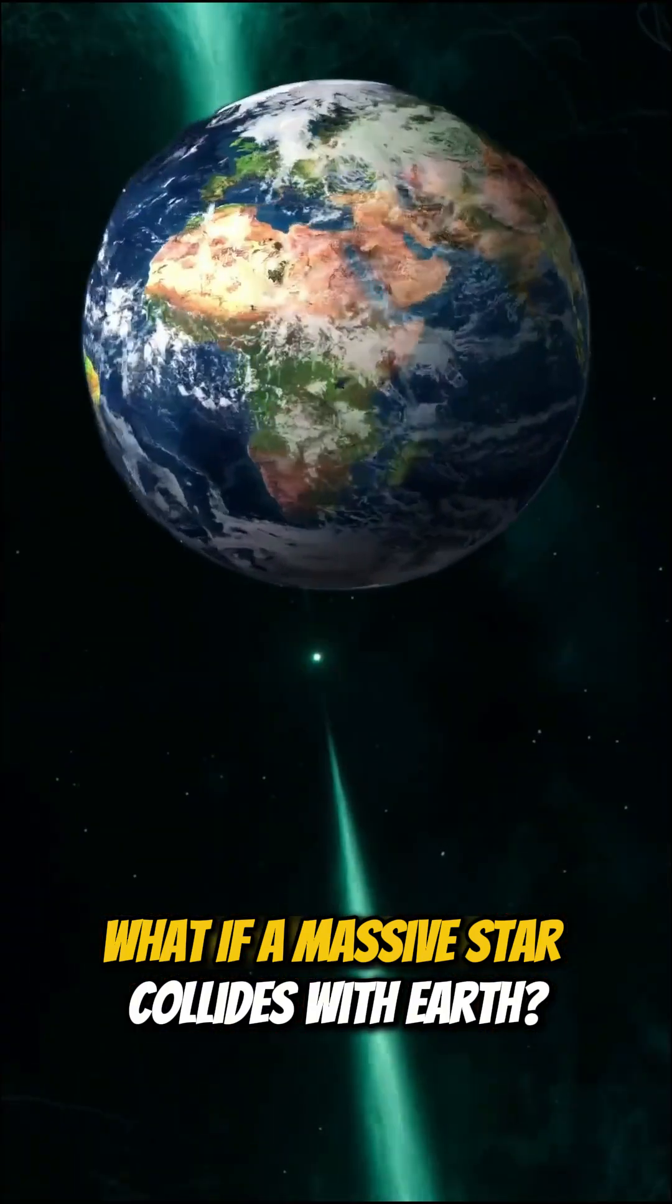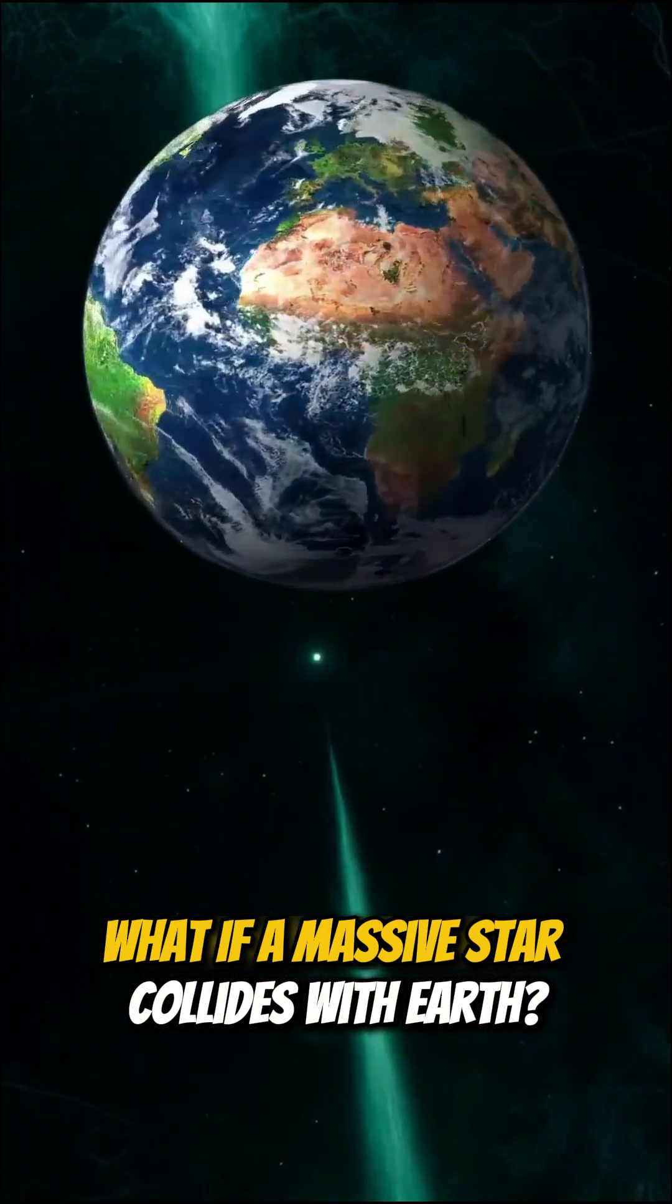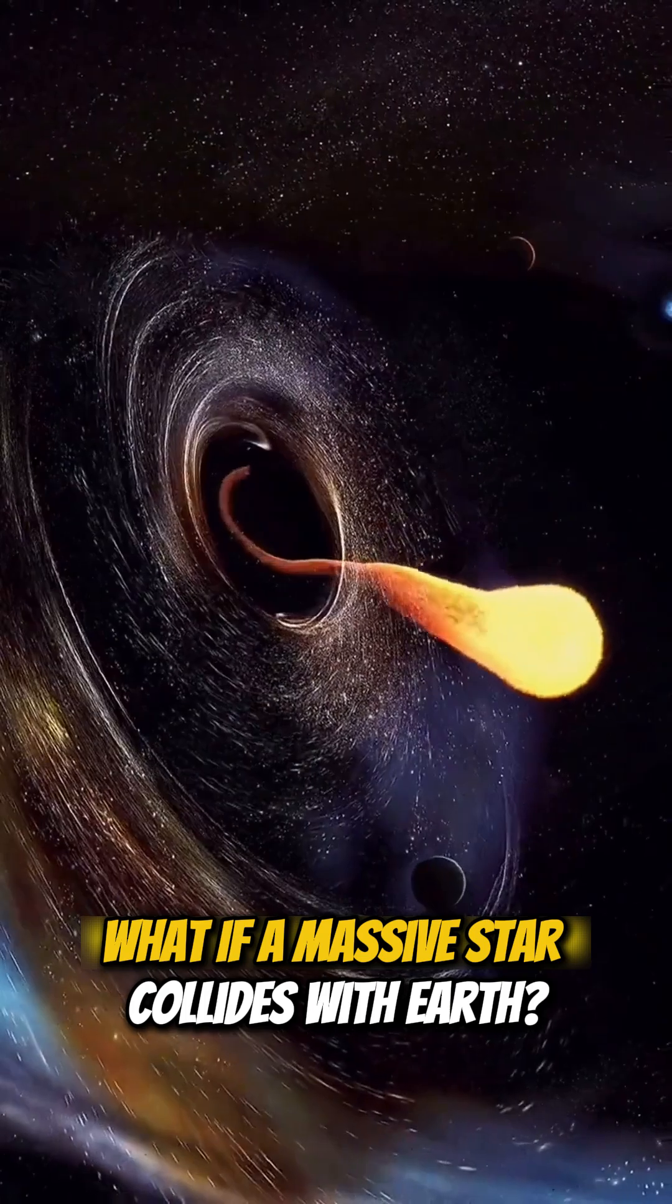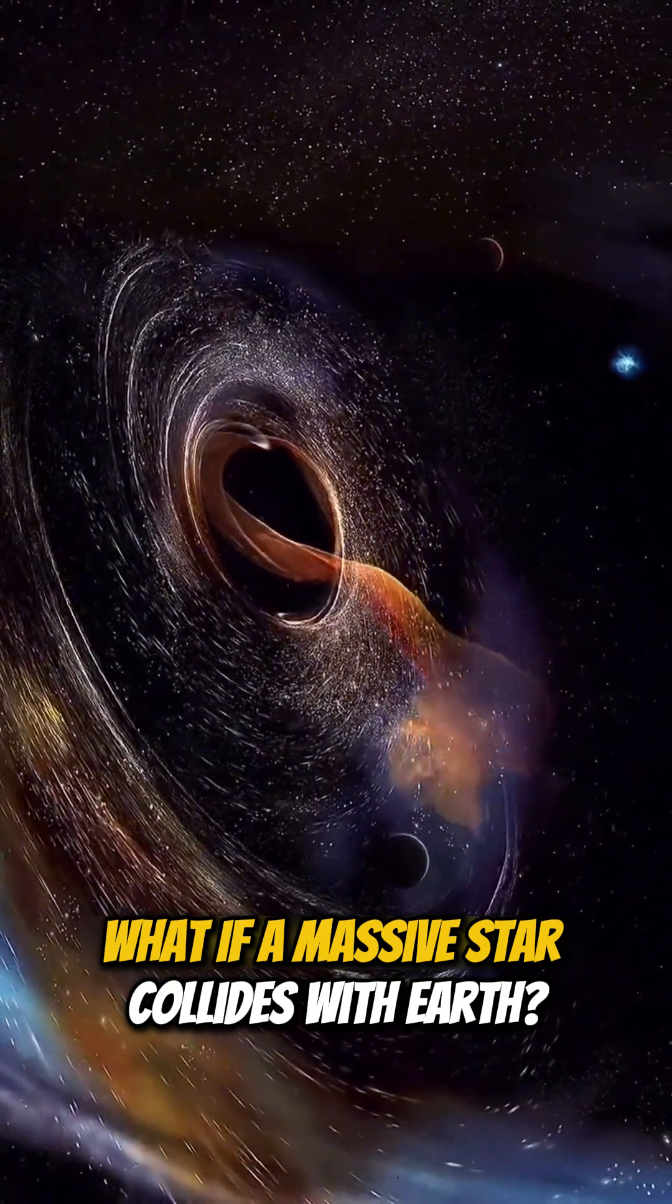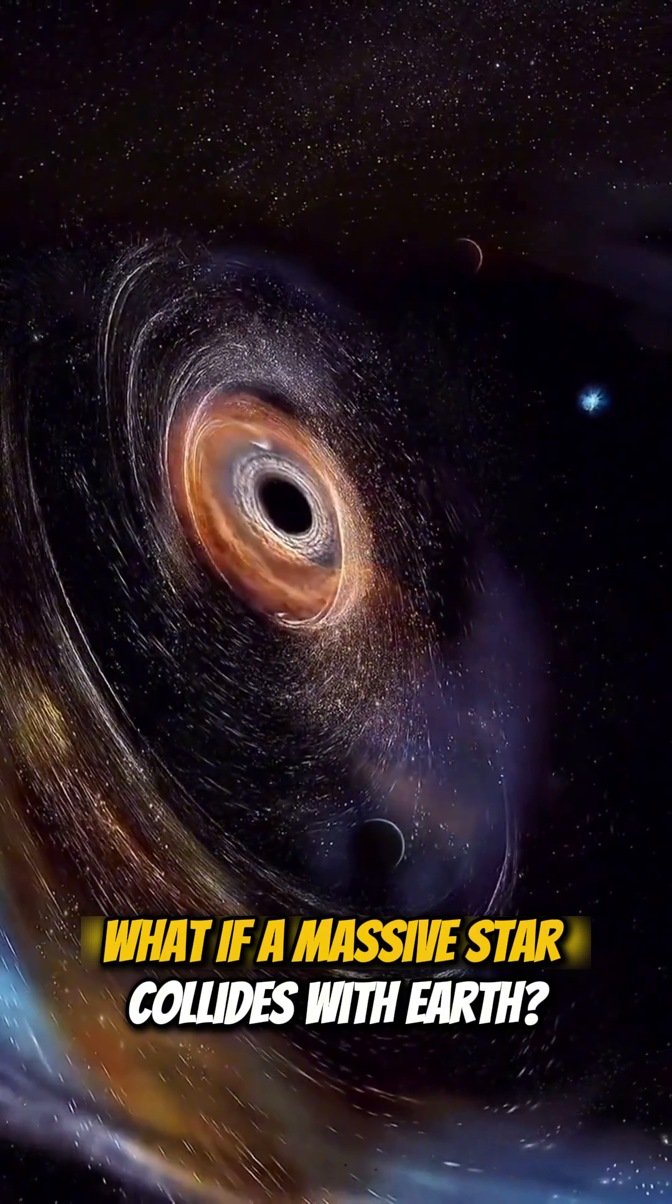Finally, when the star reaches close proximity to Earth, its immense gravity would begin tearing Earth apart. The planet would be stripped away layer by layer, forming an accretion disk that orbits the star.